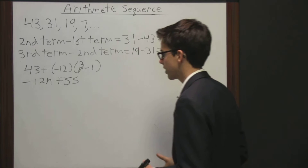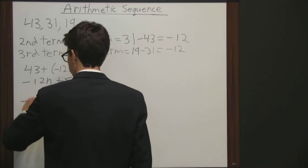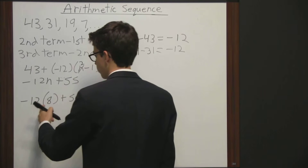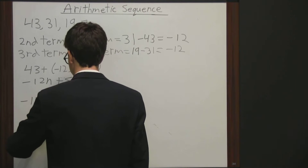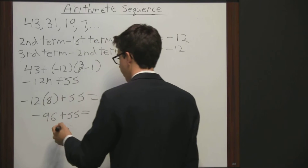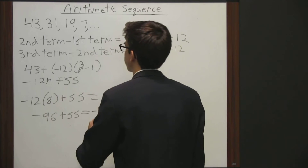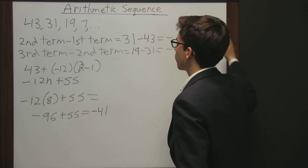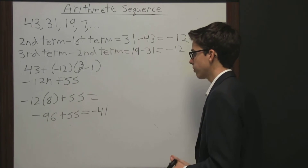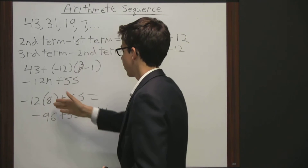Say we want to know what the eighth number in the sequence is. All we have to do is plug in 8 for n. So we take negative 12 and multiply it by 8 in parentheses plus 55. Negative 12 times 8 equals negative 96 plus 55, and that equals negative 41. So the eighth term in the sequence is negative 41. And you can do that for whatever number you want to put in for n — if you want to find the 72nd number or the fifth number in the sequence, you could plug that in.